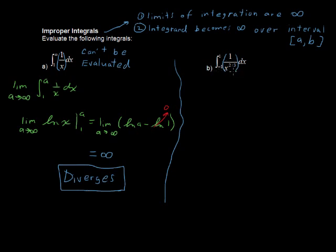So we have the integral of 1 over x to the 2 thirds. But where would this be undefined, or become infinity? Well, it's when x is 0. When x is 0, you've got this 1 over 0 business, and we can't have that.